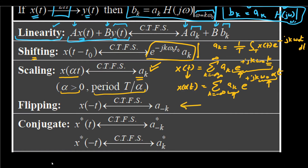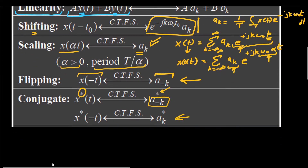Time reversal applied to a continuous time signal results in a time reversal of the corresponding sequence of Fourier series coefficients. Similarly, the conjugation property states that if we take the conjugate of x(t), it results in a*₋k — that is, we replace k with −k and take the conjugate of the coefficient.